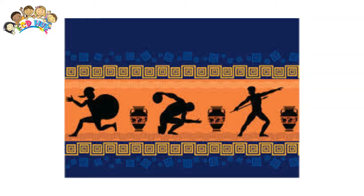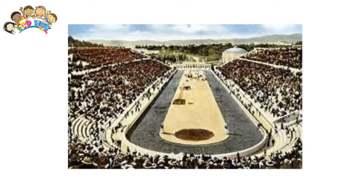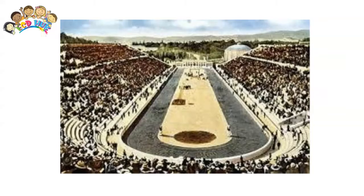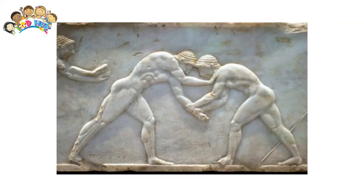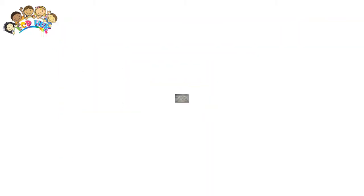Originally, the ancient Olympic Games were held in ancient Greece at Olympia. They were held every four years up until the 5th century AD. The first modern Olympics happened in 1896 in Athens, Greece.